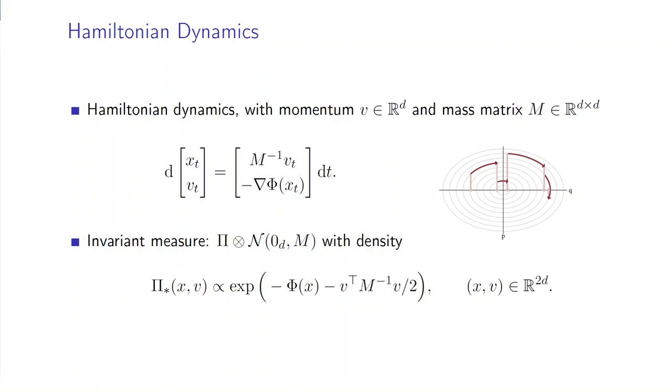Hamiltonian Monte Carlo is built upon the so-called Hamiltonian dynamics that describe the motion of a position x and velocity v on an extended space ℝ^(2d) with respect to this ordinary differential equation. These dynamics preserve an invariant measure that is denoted π*, which is just the product of the target distribution π and a Gaussian distribution for the velocity.